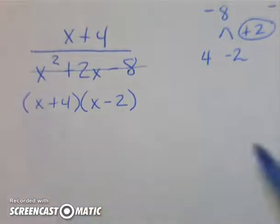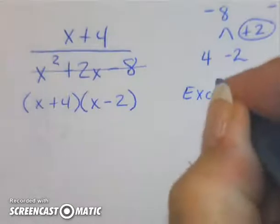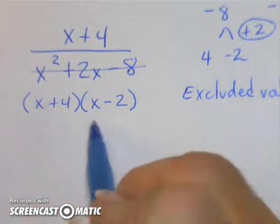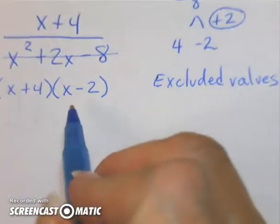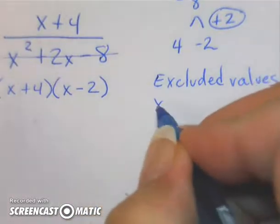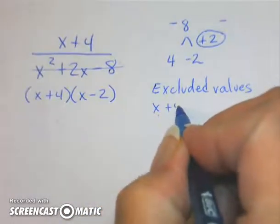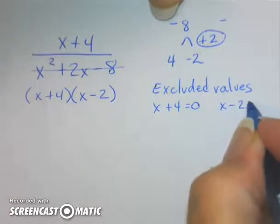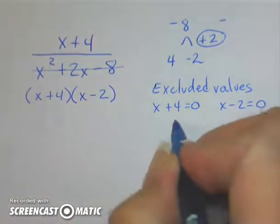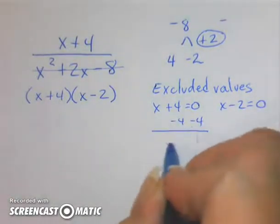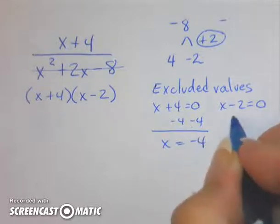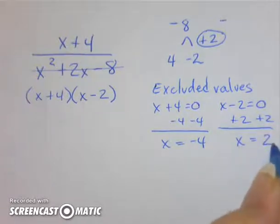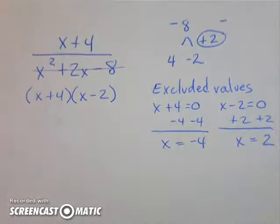So to find my excluded values for the domain, I take both parentheses and set it equal to zero and I solve them. Now finding these excluded values occurs before you simplify the problem.